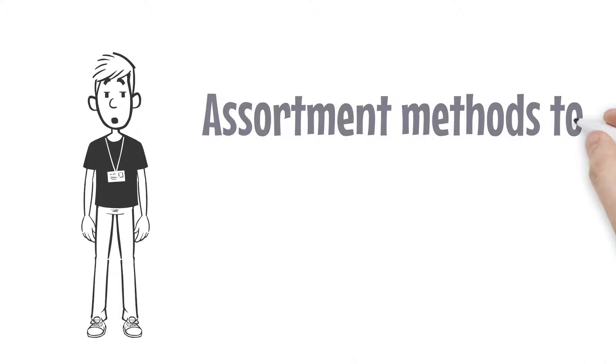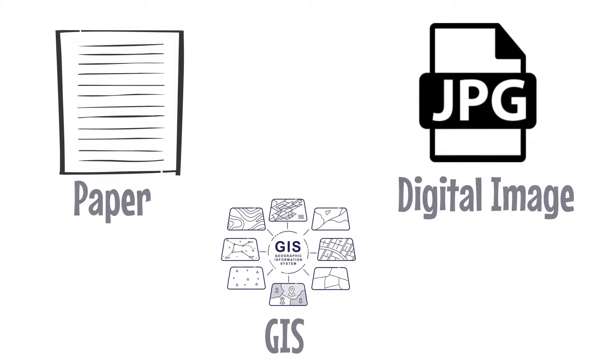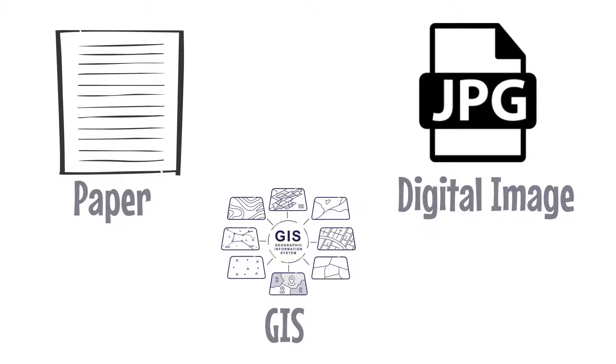Utilities have an assortment of methods to document their field measurements and they include paper, digital images, and GIS or a combination of all three.